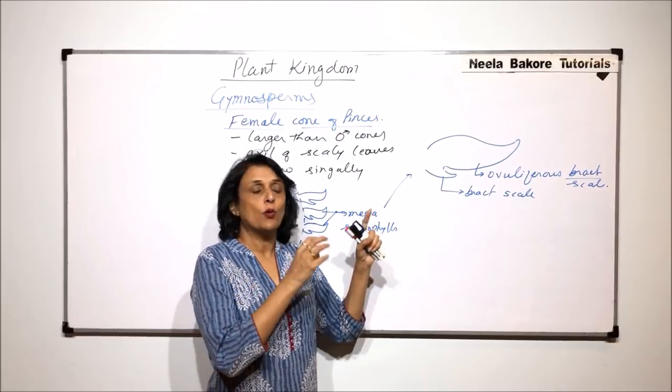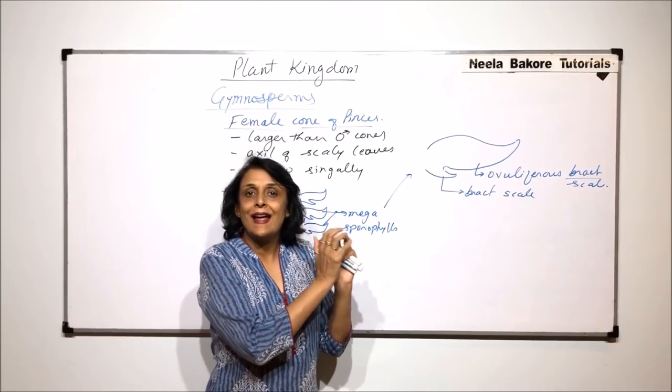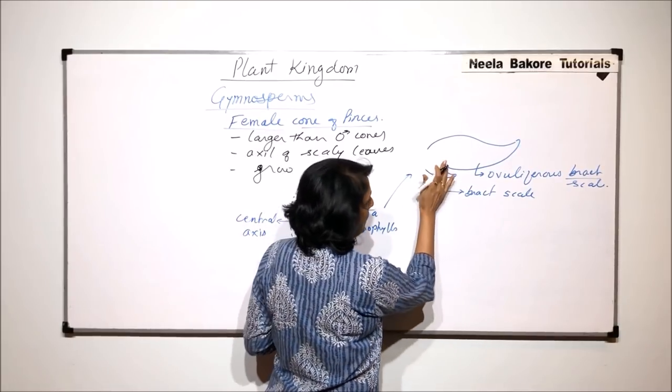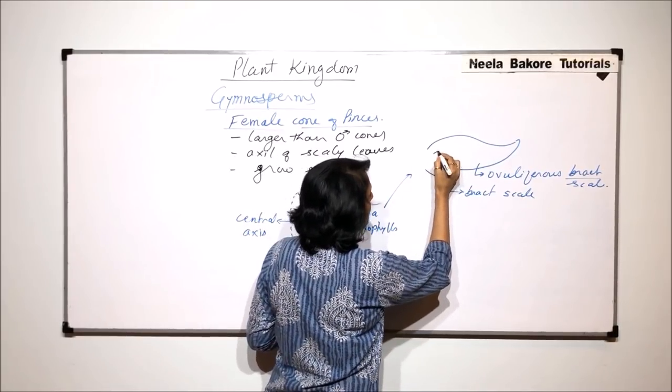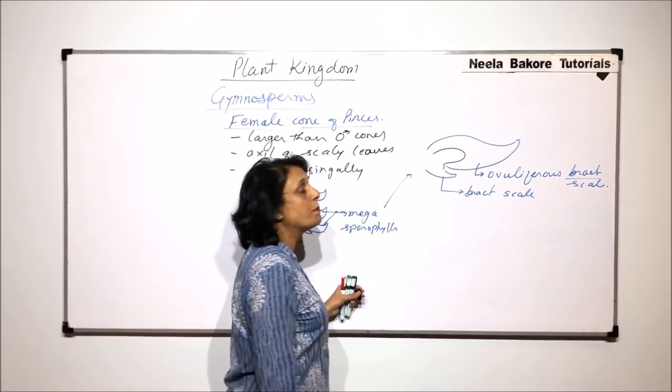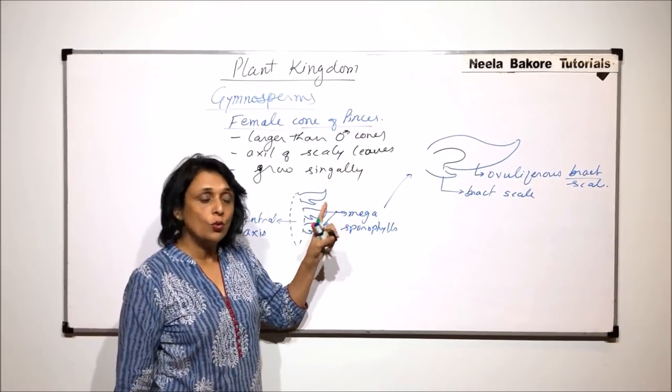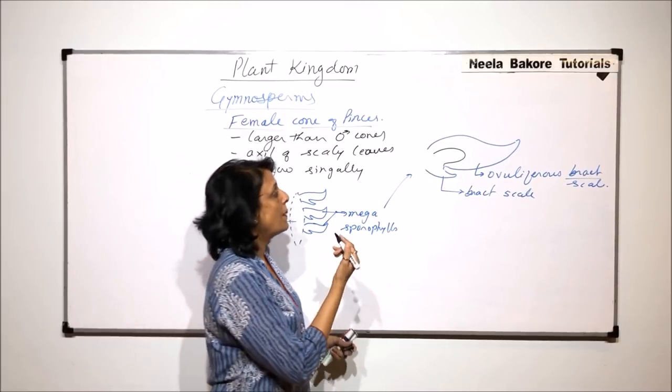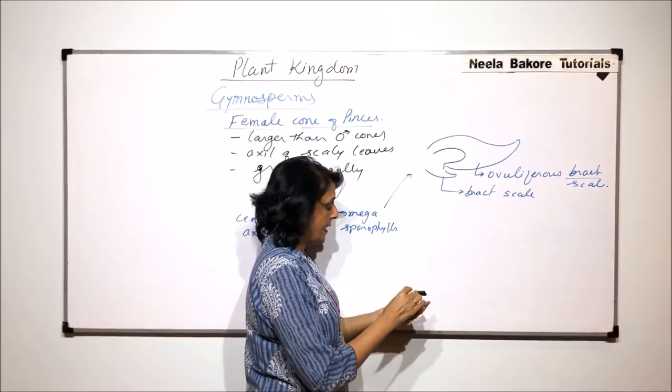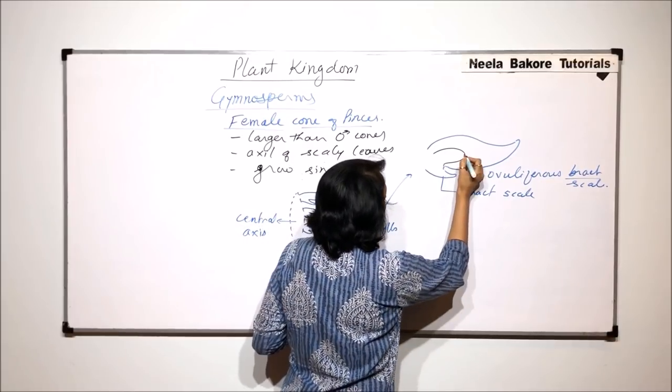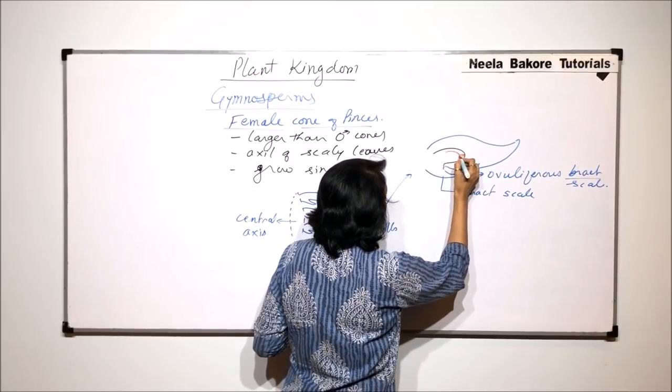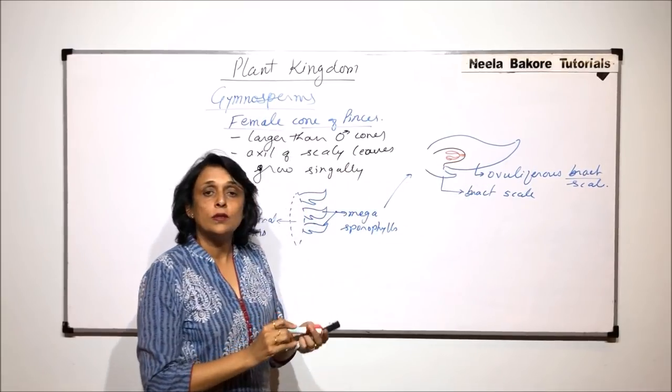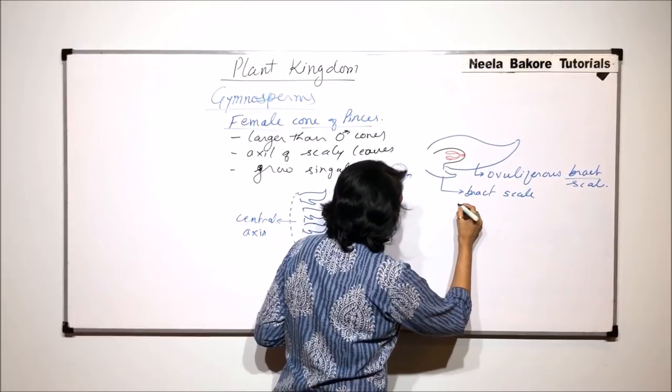For that long period, the pollen grains should remain trapped inside this structure. If we see from one side, as in this diagram, we find that there is one such depression. Actually there are two. Those two depressions will be seen when we see it from the upper side, and in this depression there is the ovule. Here is one ovule which we are drawing.